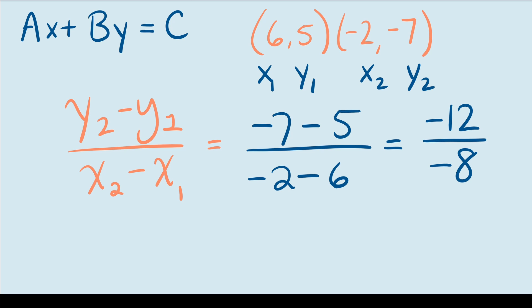The top part is negative 12 and the bottom part is negative 8. The negatives cancel out, so that leaves me with 12 over 8, which can be simplified to 3 over 2. So my slope is 3 over 2.